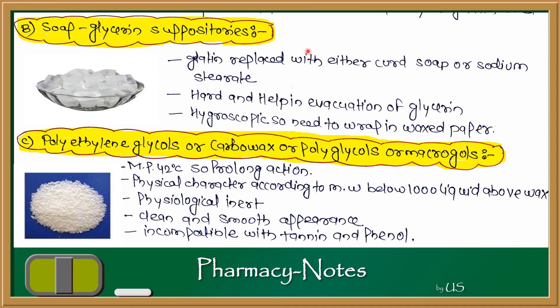Soap glycerin suppositories: in these, gelatin is replaced with either curd soap or sodium stearate. They are hard and help in the evocation of glycerin. They are hygroscopic so they need to be wrapped in wax paper to prevent moisture absorption.